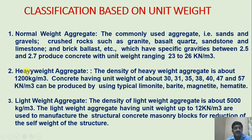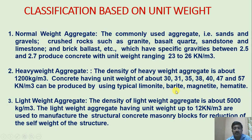Second is heavy weight aggregate. The density of heavy weight aggregate is about 1200 kg per meter cube. Concrete having unit weight of about 30, 31, 35, 38, 40, 47 and 57 kN per meter cube can be produced by using typical limonite, barite, magnetite, and hematite.